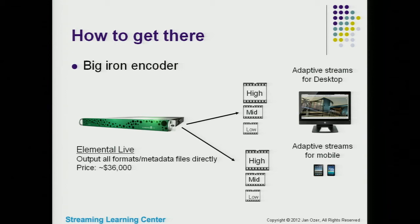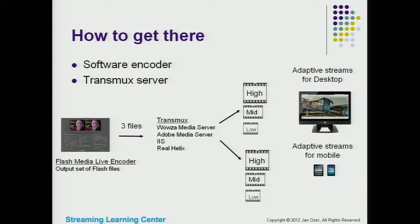Another alternative is to use the Adobe Flash Live Media encoder, which is free, and create three streams — the maximum that encoder supports — then send those to a server that can transmux them into adaptive streams for both desktop and mobile.